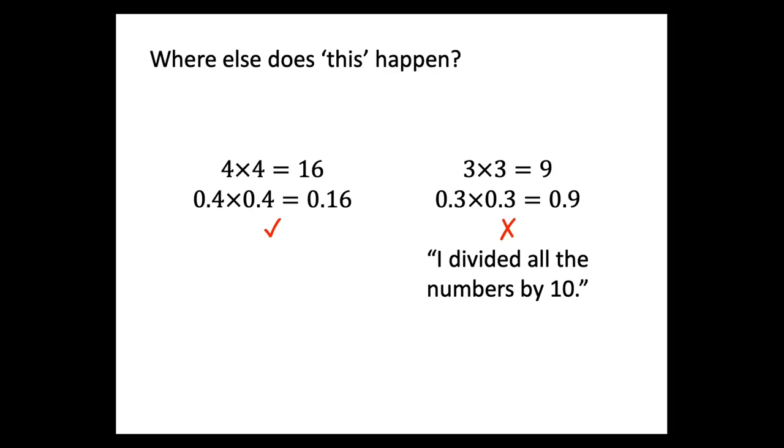So I was thinking about where else does this—whatever this is—where else does this happen? Sometimes students will do 4 times 4 is 16, so 0.4 times 0.4 is 0.16. They might say 0.16 instead of 0.16, which is right. But with 3 times 3 equals 9, you can't do the same thing. 0.3 times 0.3 isn't 0.9. And they might think, well, I've divided all the numbers by 10. I've scaled it all down. Why doesn't it work? And that feels like that's a similar issue, because 0.3 times 3 would be 0.9, but 0.3 times 0.3 wouldn't be.